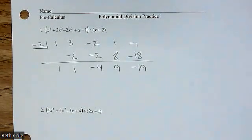If your numbers start to spiral out of control and you start getting numbers in the hundreds and thousands, you missed a negative somewhere — that's likely what happened. Or you just multiplied wrong, because I'm not going to do that to you.